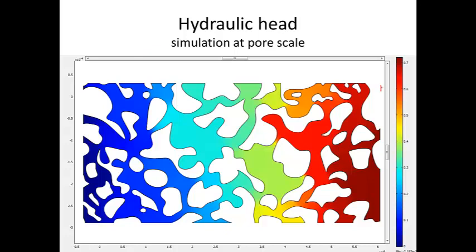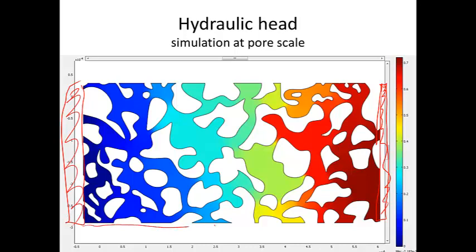This problem consists of a boundary on this side where we fix the hydraulic head at one value, and a boundary on this other side where we fix the head at a smaller value. On these sides, we're saying that there's no flow. If we do that, then the hydraulic head distribution within this pore structure is shown by the colors. You can see it generally goes from high hydraulic head on the right to lower hydraulic head on the left, but the boundaries from one color to another are pretty complicated — not a nice, smooth transition.